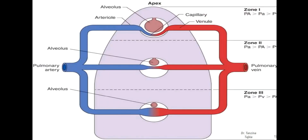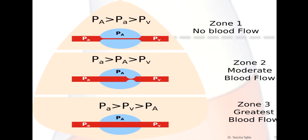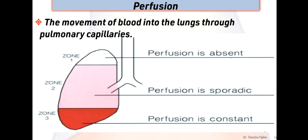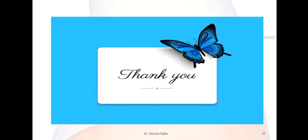In this figure, zone 1, zone 2, and zone 3 are shown. PA means arterial pressure, small letter 'a' means alveolar pressure, and V means venous pressure. Perfusion refers to the movement of blood into the lungs through pulmonary capillaries. In zone 1, perfusion is absent. In zone 2, perfusion is sporadic. And in zone 3, perfusion is constant. Thank you for your patience in listening.